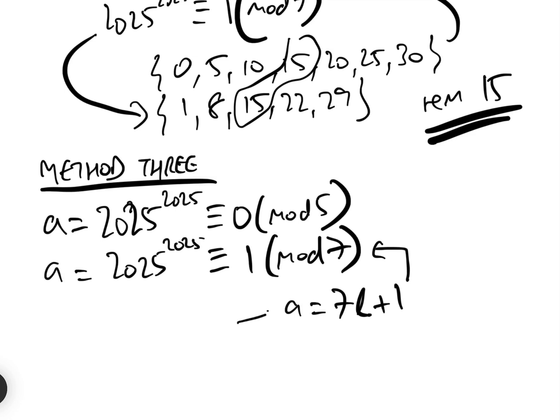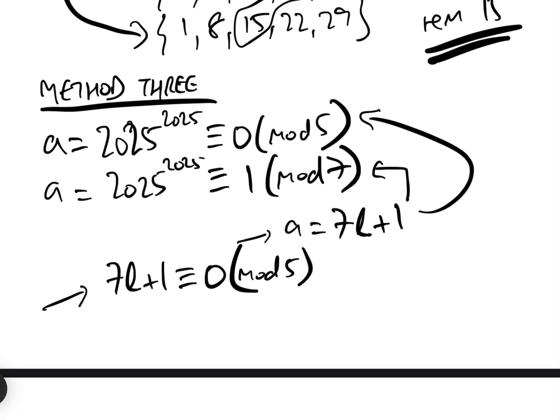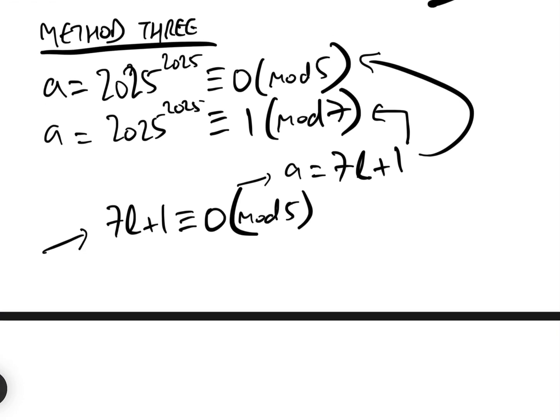But we also know that A is equal to 0 mod 5. So therefore, we know that 7L add 1 equals 0 mod 5. So solving this equation here, 7L add 1 equals 0 mod 5. Well, we can solve that by inspection. If we have L equals 2, 7 times 2 is 14, add 1 is 15, which is 0 mod 5. So from there, we know that L equals 2 mod 5.